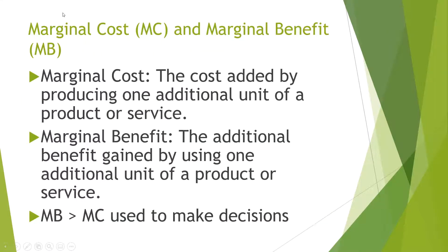The next term is marginal cost and marginal benefit. Marginal cost is the cost added by producing one additional unit of a product or service. Marginal benefit is the additional benefit gained by using one additional unit of a product or service. When making decisions, you need to consider if the marginal benefit is greater than the marginal cost. For example, if we produced so many computers that we couldn't use all of them, there would be a point where the marginal cost of producing those computers would be greater than the marginal benefit.